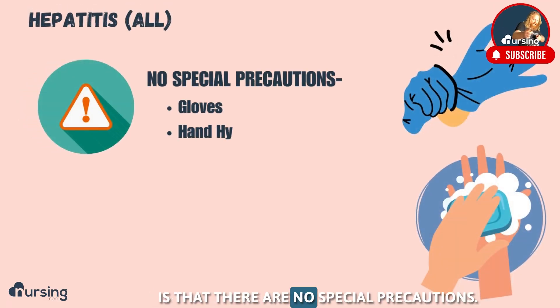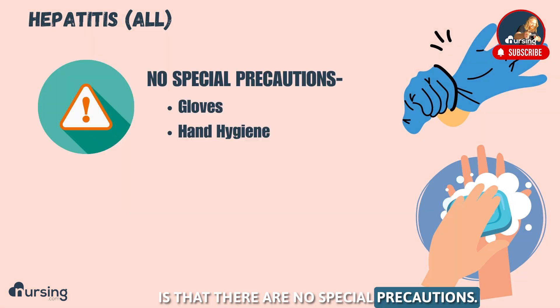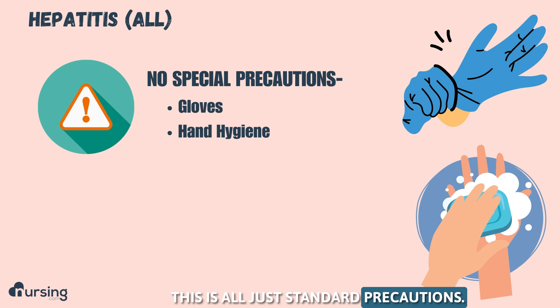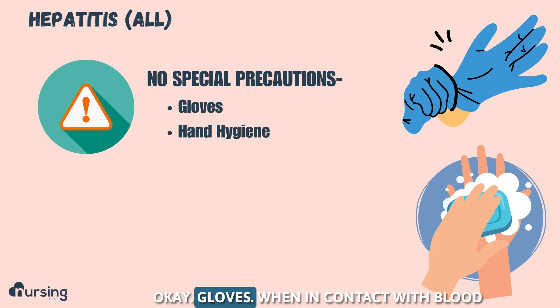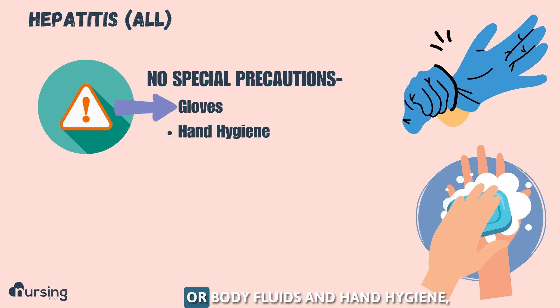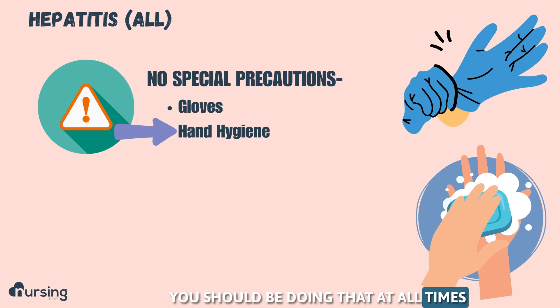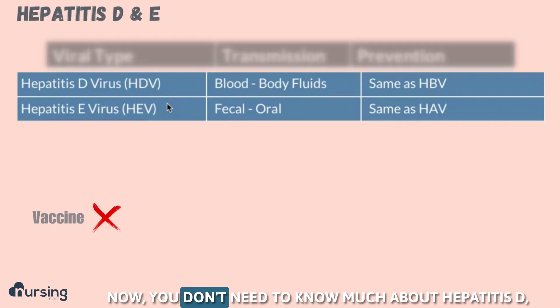One big thing to know about hepatitis is that there are no special precautions — this is all just standard precautions. Gloves when in contact with blood or body fluids and hand hygiene. You should be doing that at all times when working in the hospital.